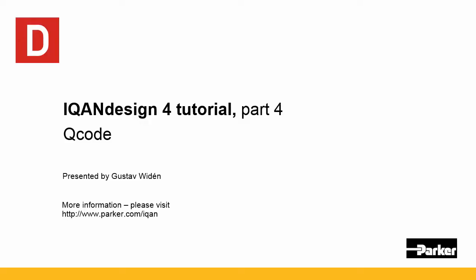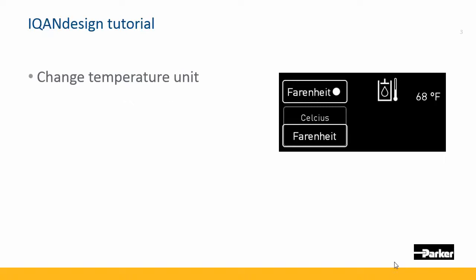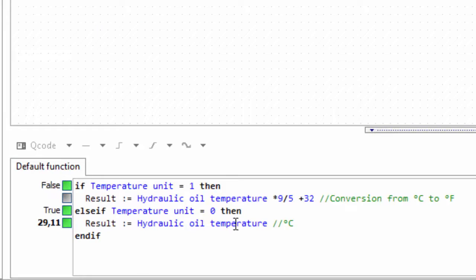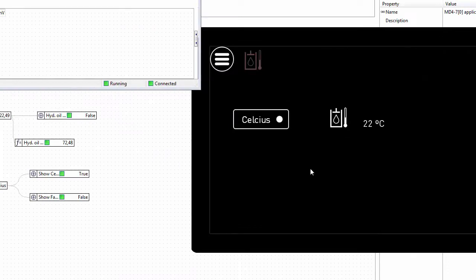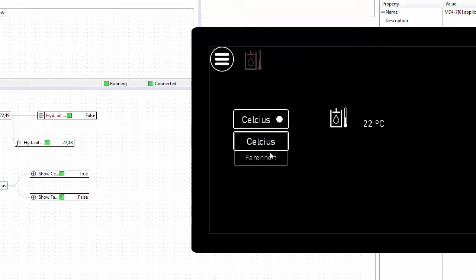Welcome to this I-CAN Design tutorial where we will be looking at the programming method Q code. We're going to use this to show an example of how to change temperature units between Celsius and Fahrenheit. The purpose is to demonstrate some of the syntax for this programming method, and we'll also get an opportunity to see the state parameter channel that we'll be using for selecting what gets shown on the display.